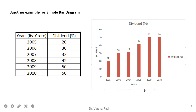In a second example, years and corresponding dividend values are given. On the x-axis the years are represented, and the dividend value for each year is represented as a bar.